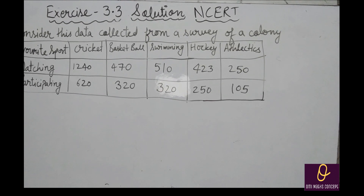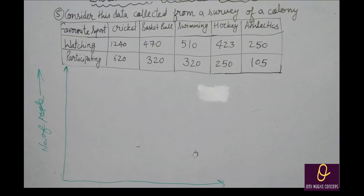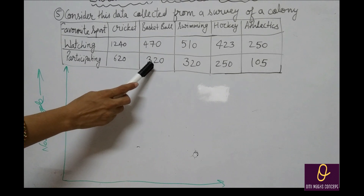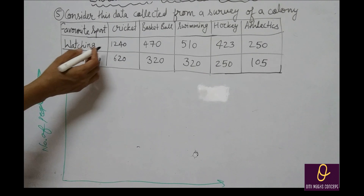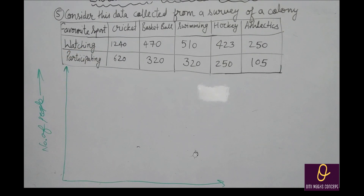Now next question: consider this data collected from a survey of a colony. Favorite sport given है — watching and participating given है, और questions भी बनने हैं. First draw a double bar graph choosing an appropriate scale. Scale के लिए: 620, 320, 250 — maximum 1240 तक है. 1000 तक 1-1 नहीं हो सकता, तो 100 का gap लेंगे: 100, 200, 300, 400, 500, 600, 700, 800, 900, 1000, 1100, 1200, 1300.